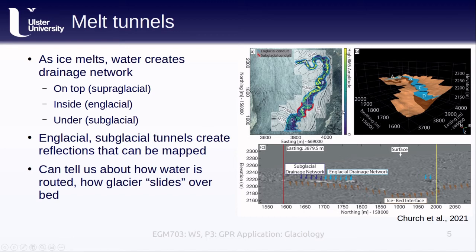One limitation here is that as the amount of meltwater changes, the size of the drainage tunnels changes. As more meltwater is routed through these tunnels, they tend to grow. As soon as the melt stops and the water drains out, the tunnels start to close due to the weight of the ice. But they still provide us a very useful snapshot, and for some glaciers, melt tunnels even remain throughout the winter and into the following spring.